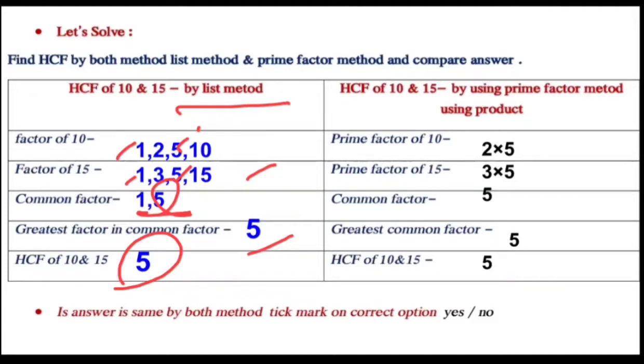Prime factor of 10 is equal to 2 into 5. Prime factor of 15 is 3 into 5. Here the common factor is 5. This common factor is 5, so the greatest common factor is 5.